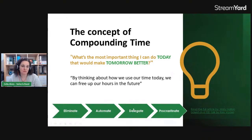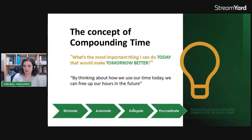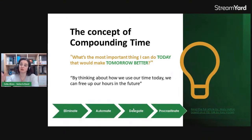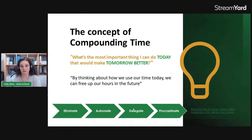Then, if we cannot eliminate, we can think of automating it. And if we cannot automate it, maybe we can ask someone else to do it — delegate that task. Or we can automate it in a way that our expertise in Excel is no longer needed. I just have to teach someone else: 'You click this button, you click this button, and that's it.' So we can delegate that task to someone else.